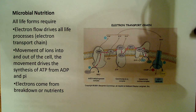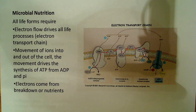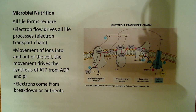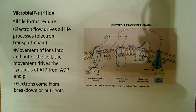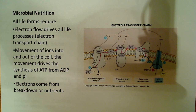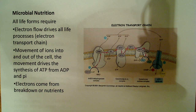This is a really important point, and the only real difference between the different types of bacteria is how they go about doing this — for instance, what is the final electron acceptor. All these life forms basically require some electron flow. This electron flow drives the processes of life, essentially an electron transport chain. The movement of ions into and out of the cell drives the synthesis of ATP from ADP and inorganic phosphate, and the electrons come from the breakdown of nutrients.